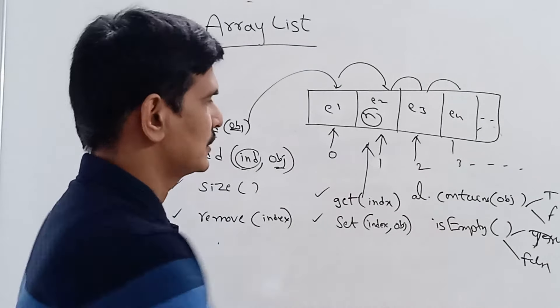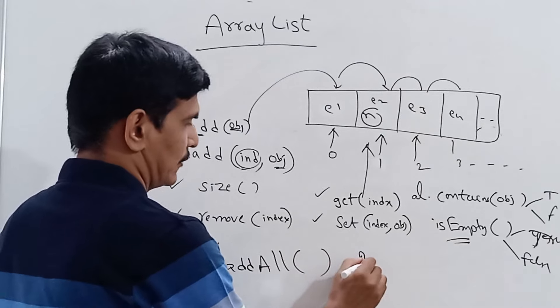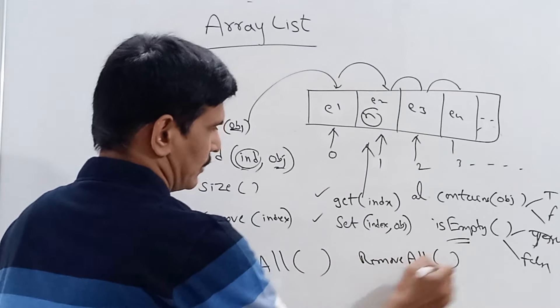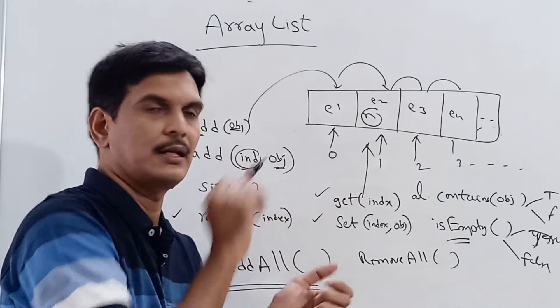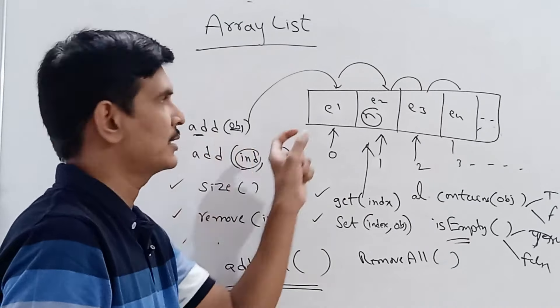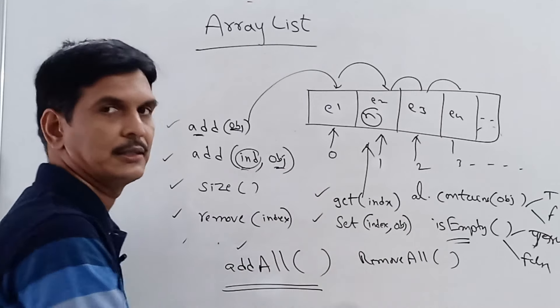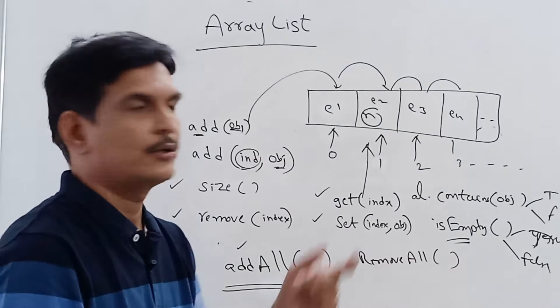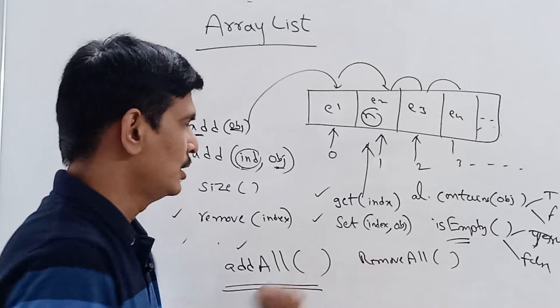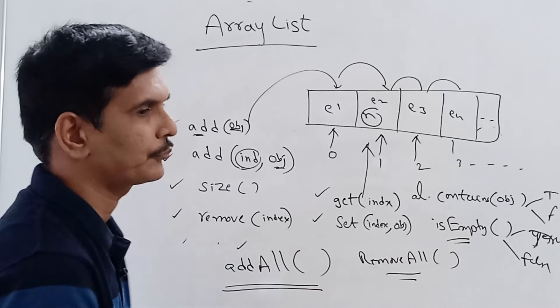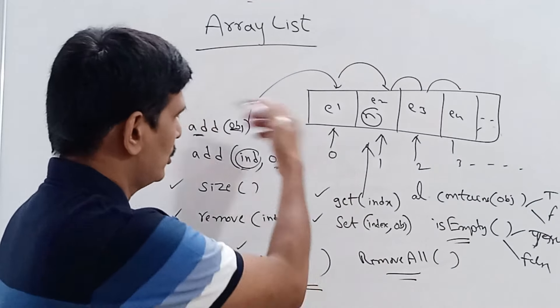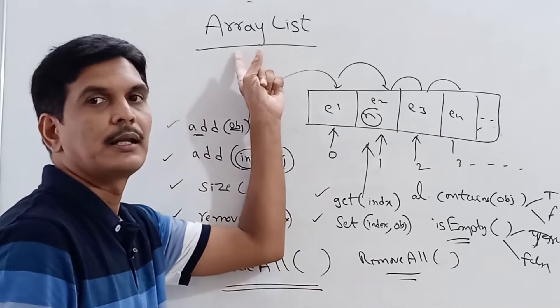There is also addAll() and removeAll(). The add() method adds a single object, but if you want to add a group of elements or objects at once, use addAll(). Similarly, remove() removes a single element, but to remove a group of elements at once, use removeAll().